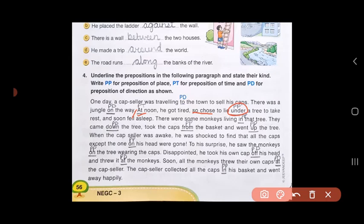When the cap seller was awake, he was shocked to find that all the caps, except the one on his head, were gone. 'On' will be preposition of place, so PP. To his surprise, he saw the monkeys on the tree wearing the caps. Again, 'on' becomes preposition of place, PP.